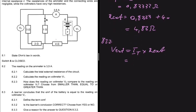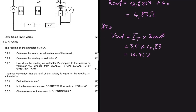We know I is 3.5 A and R_external is 4.83 ohms. So V_external equals 3.5 multiplied by 4.83, giving us 16.91 volts.